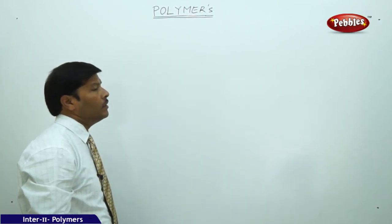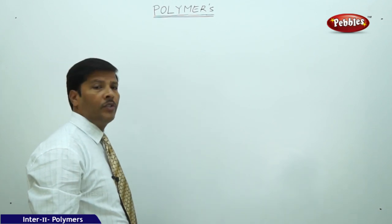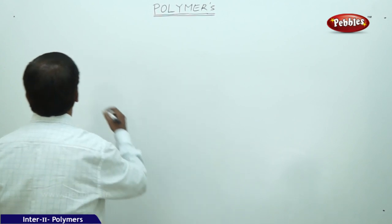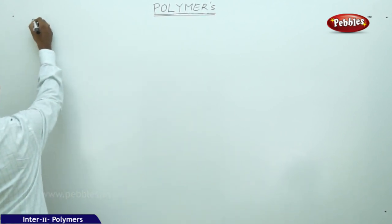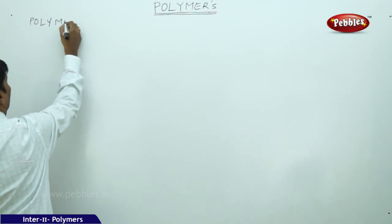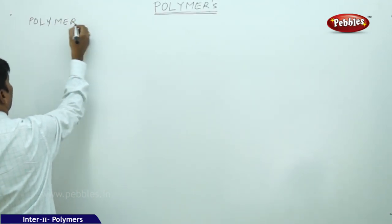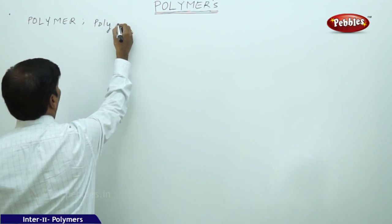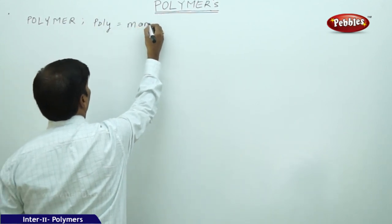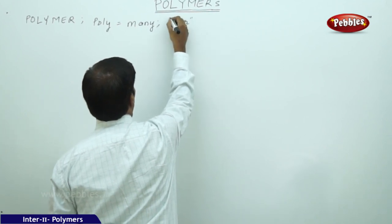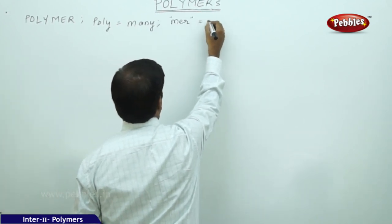Let us go to the next part of the discussion in organic chemistry — the new chapter on polymers. The word 'poly' means many and 'mer' means parts.